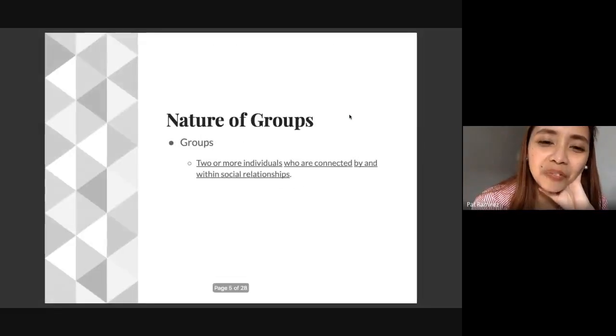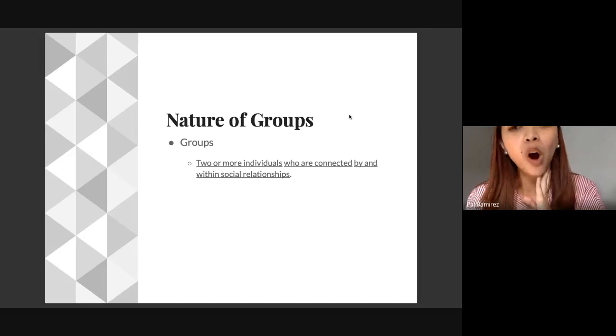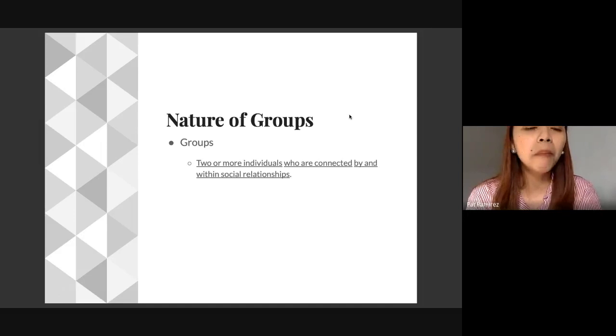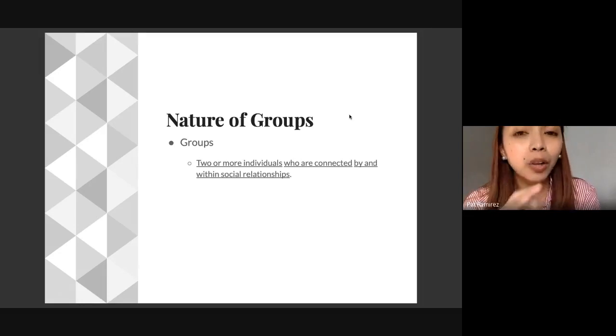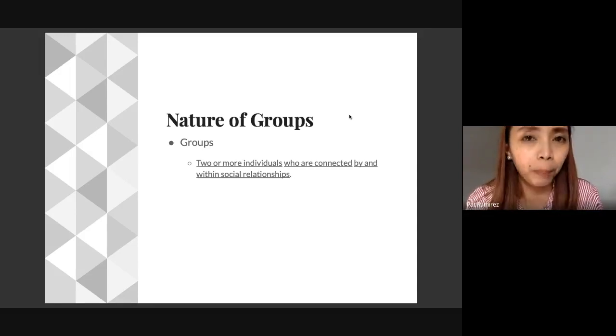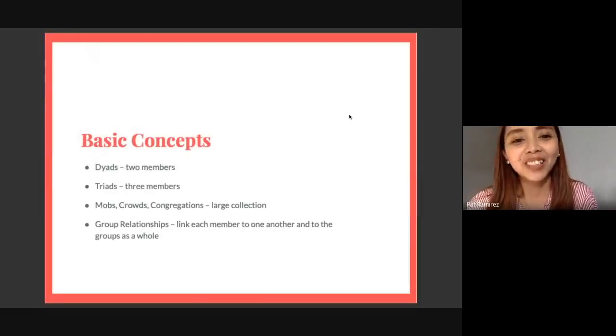To further discuss the nature of groups, when we try to define what groups are: groups are two or more individuals who are connected by and within social relationships. When it comes to numbers, even if it's just two or three people, it's still considered a group. Let's say in third or fourth year you enroll in research one and decide you need a partner - that's still considered a group, a team effort.